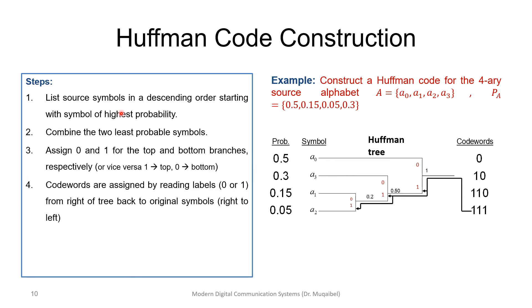Here are the steps to construct a Huffman code, presented alongside an example. The example: construct a Huffman code for a four-symbol source A = {a0, a1, a2, a3} with probabilities given (summing to one). Step 1: list symbols in descending order of probability — 0.5 (a0), 0.3 (a3), 0.15 (a1), 0.05 (a2). Step 2: combine the two least probable symbols.